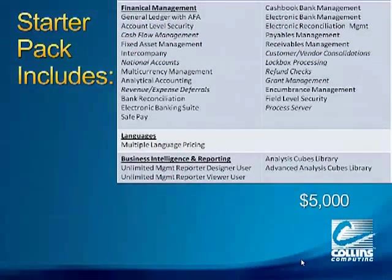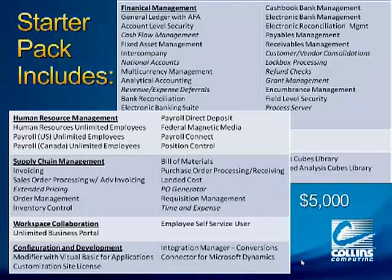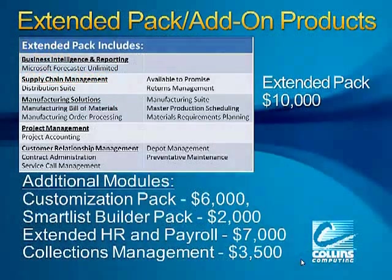The first option is that clients get a starter pack, which includes various modules plus three users. This covers the financial management area, management reporter, human resources and payroll, direct deposit, federal magnetic media, and all supply chain management basic modules — invoicing, sales order processing, inventory, purchase order processing, and more. That retails for $5,000. If you need additional modules such as the forecaster product, available to promise, returns management, manufacturing modules, project accounting, or contract administration, you would have the extended pack, which retails for $10,000.